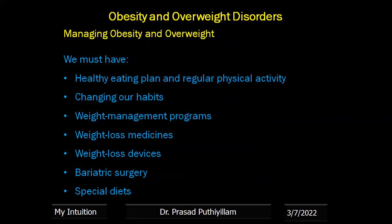Following a healthy eating plan with fewer calories is often the first step in treating overweight and obesity. If you are overweight or have obesity, you should also start regular physical activity when beginning a healthy eating plan. Being active may help use calories and stay at a healthy weight. Changing our eating and physical activity habits and lifestyle is very difficult, but with a plan, effort, regular support and patience, we may be able to lose weight and improve our health.